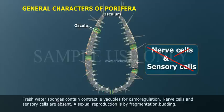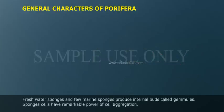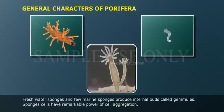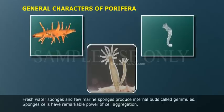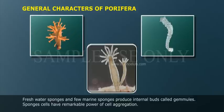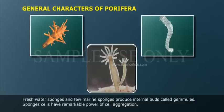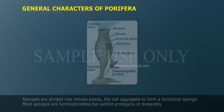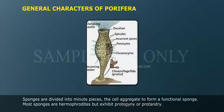Nerve cells and sensory cells are absent. Asexual reproduction is by fragmentation and budding. Fresh water sponges and a few marine sponges produce internal buds called gemmules. Sponge cells have a remarkable power of cell aggregation — when sponges are divided into minute pieces, the cells aggregate to form a functional sponge.